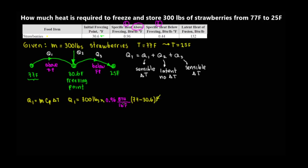The pounds cancel out, leaving BTUs. Calculating: 300 × 0.96 × (77 − 30.6) = 13,363.2 BTU. That is Q1.